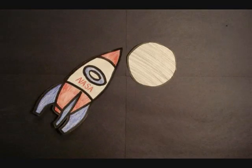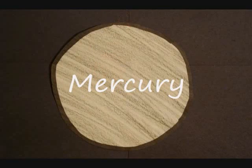Our last stop is Mercury. Mercury is the smallest planet and is the 1st planet from the sun. It is also rocky.